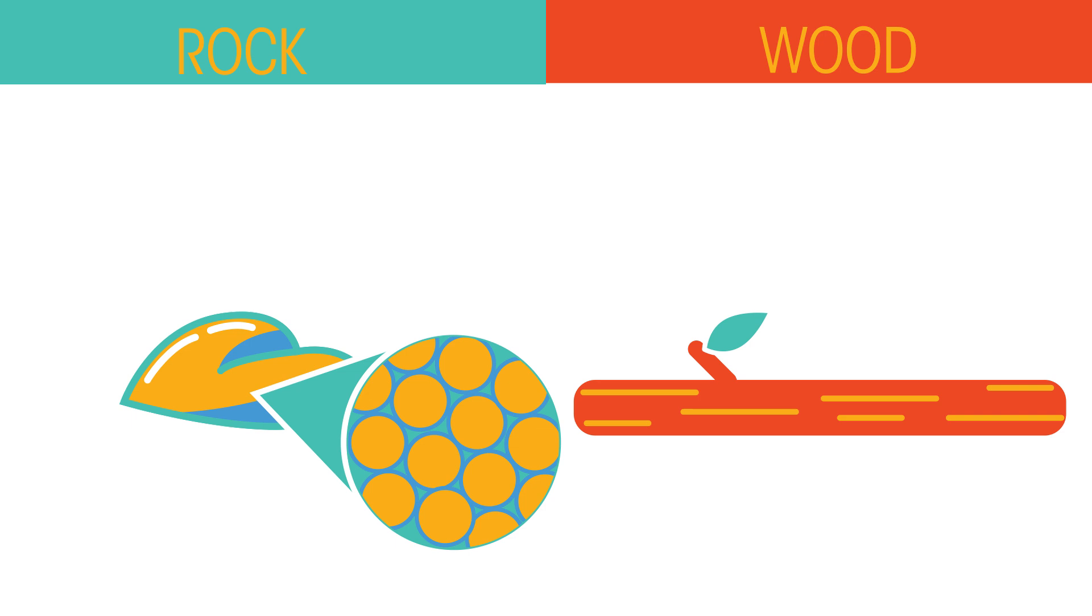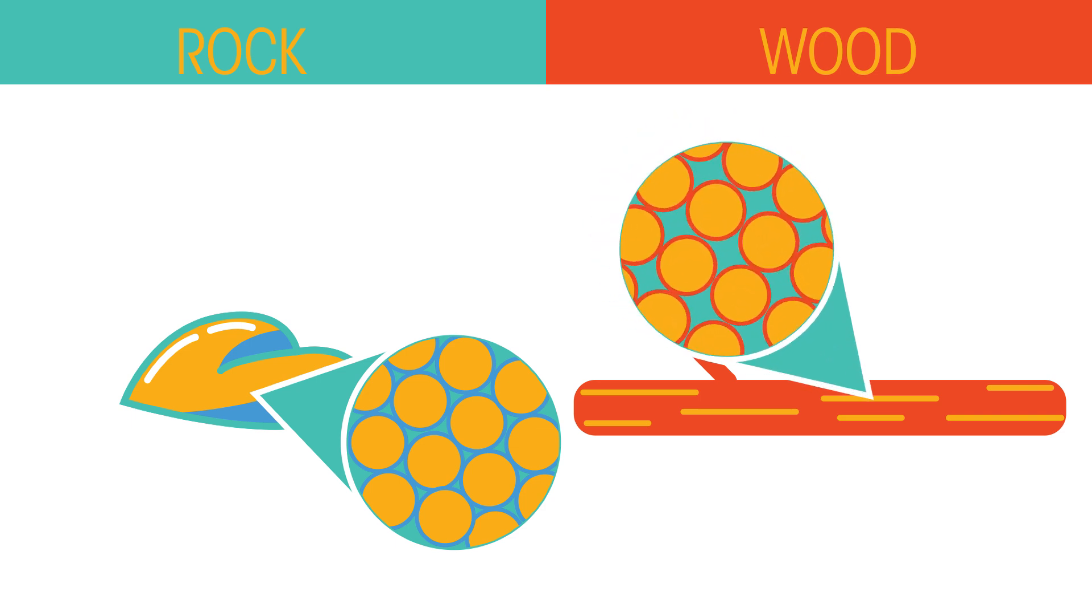In the rock, the molecules are squished tightly together, whereas in the wood they are more spread out, and in air much more spread out.